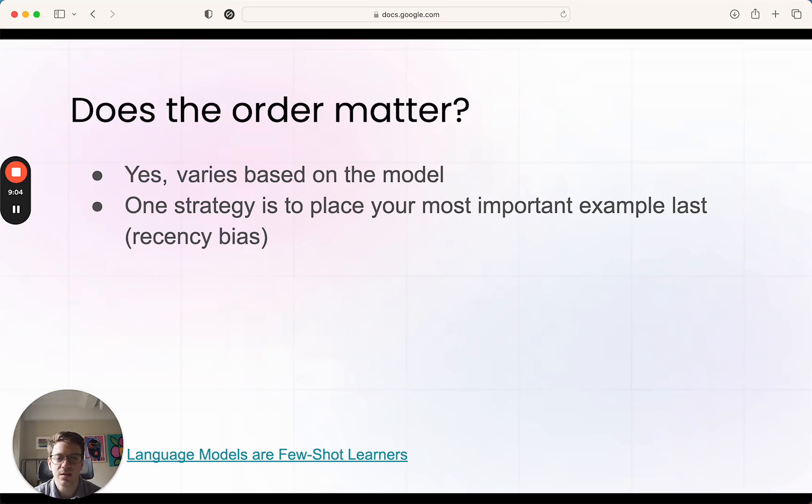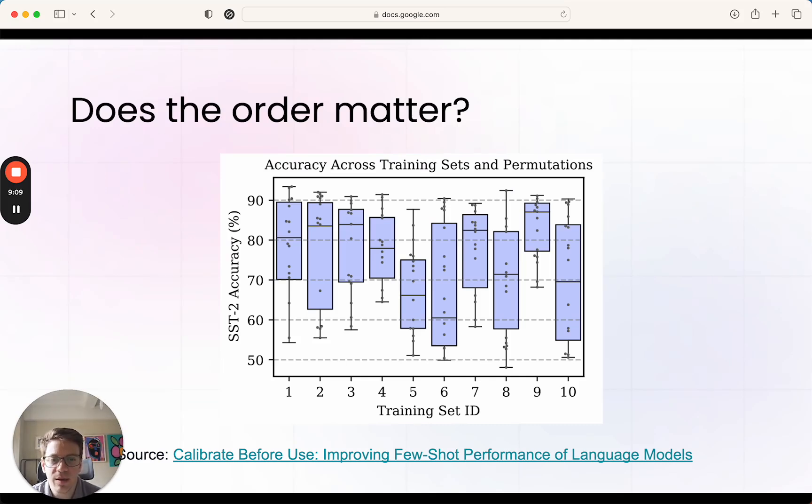This is from a paper—it's from a while ago, so this could certainly change now. But basically, they had a set of examples and they varied the ordering, and you could see how different the accuracy was across the different variations. Again, this was for an older model, and this is almost like a year and a half old at this point, which is almost like a decade in AI time. So again, it's something worth testing out.